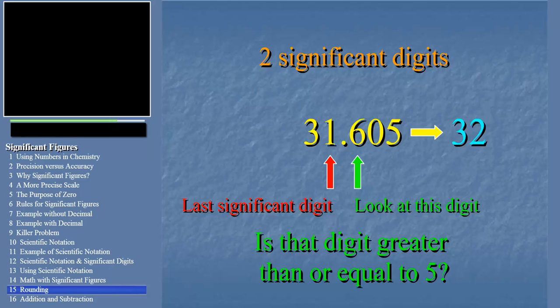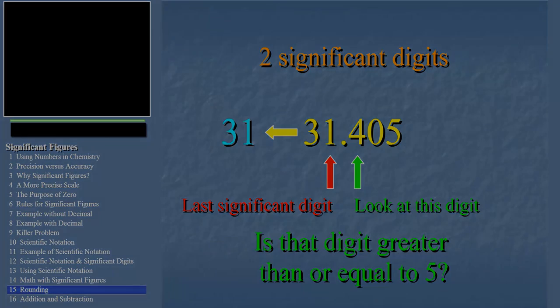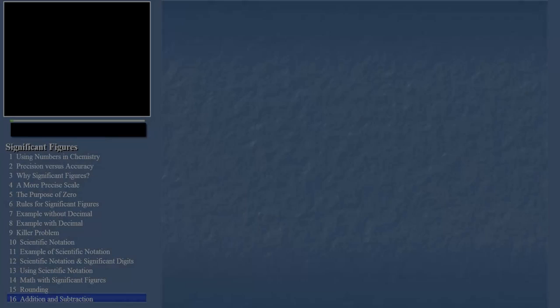Now, what would have happened if the number had been 31.405 when we did the calculation? Let's see. The number next to our significant digit is less than or equal to 5, right? So in that case we leave the significant digit as it is.